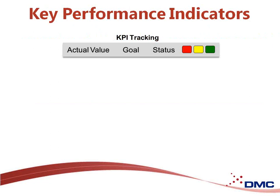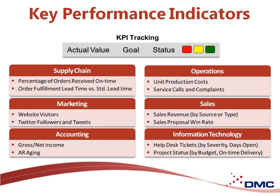So, a key performance indicator — what is it? It's a quantifiable measurement of critical success factors that align with your overall company goals. They don't change very often, but the target goal value might change over time. It's usually recommended that each department select three to five key performance indicators. You don't want many more than that, or else people start to lose focus and you may not achieve any of your goals.